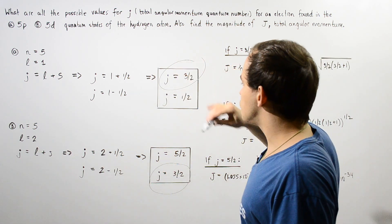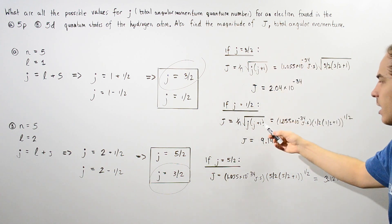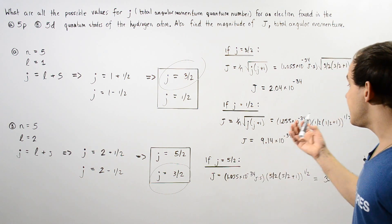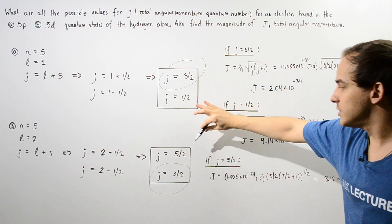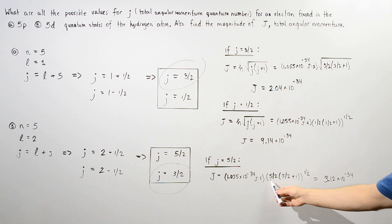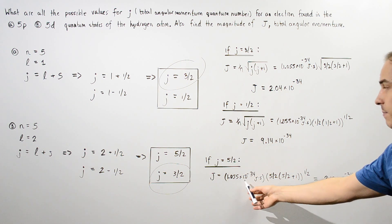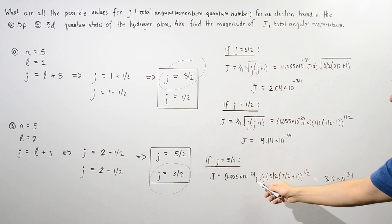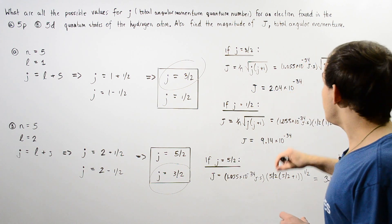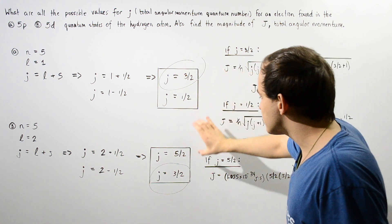The J = 3/2 result confirms that those two states from parts A and B have exactly the same total angular momentum. Now if J equals 1/2, we plug in 1/2 instead of 3/2, and that gives us about 9.14 times 10⁻³⁴. Finally, if we use J equals 5/2, we compute 5/2 times (5/2 + 1), take the square root, and multiply by h-bar, which gives us about 3.12 times 10⁻³⁴. These are the possible values for the magnitude of the total angular momentum.